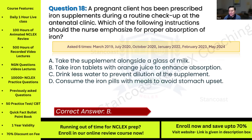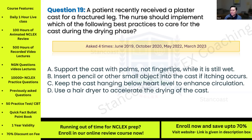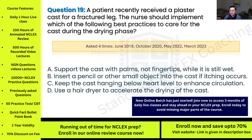Question nineteen: A patient recently received a plaster cast for a fractured leg. The nurse should implement which of the following best practices to care for the cast during the drying phase? This has been asked four times. Options: A) support the cast with palms, not fingertips, while it's still wet; B) insert a pencil or other small object into the cast if itching occurs; C) keep the cast hanging below heart level to enhance circulation; D) use a hairdryer to accelerate the drying of the cast.